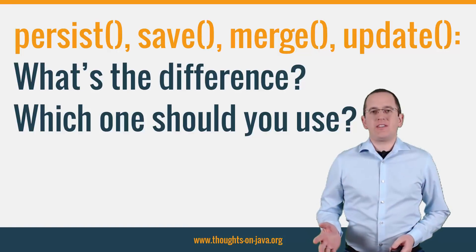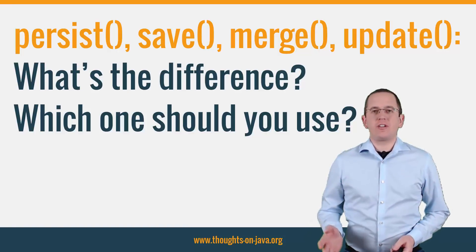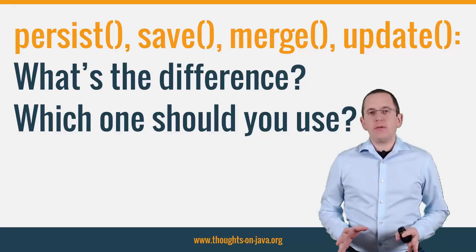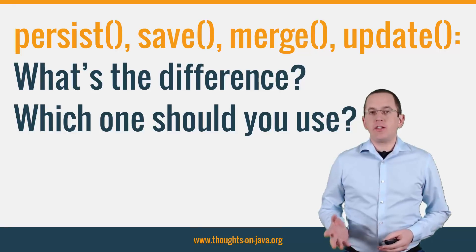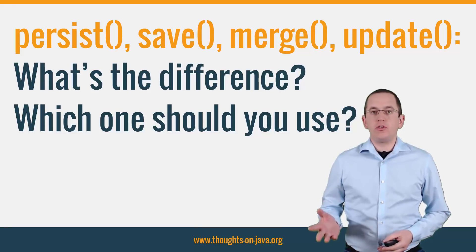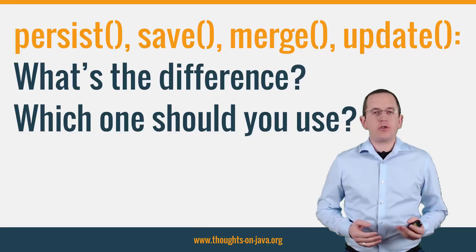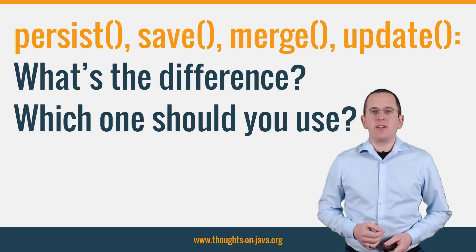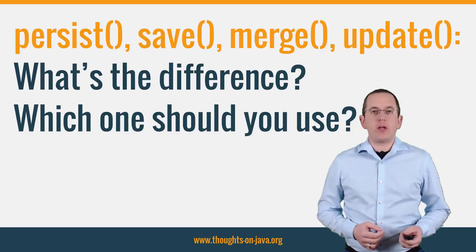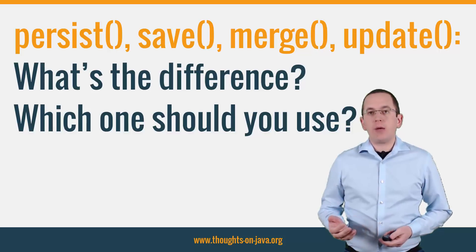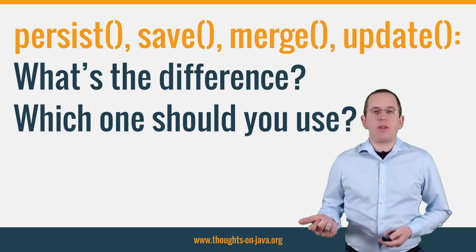Hi, I'm Torben Janssen from thoughts-on-java.org. JPA and Hibernate provide different methods to persist new and to update existing entities. You can choose between JPA's persist and merge and Hibernate's save and update methods.